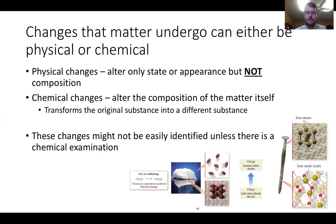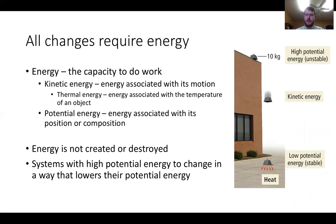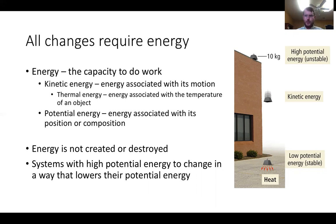The last topic for this part is energy, which we'll cover more deeply in Chapter 6. Energy is simply the capacity to do work. There are two types: kinetic energy, associated with motion, and potential energy, associated with position or composition. The food we eat has chemical potential energy, and our bodies convert it to kinetic energy so we can work. This ends Chapter 1, Part 1 — Part 2 will cover units, dimensional analysis, and problem-solving patterns.